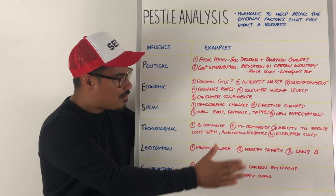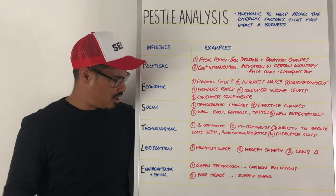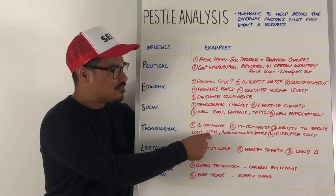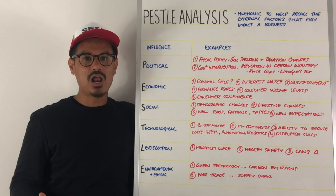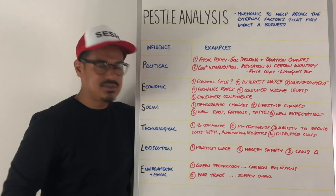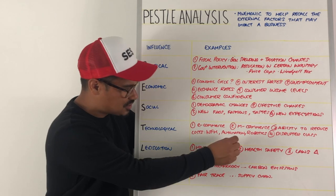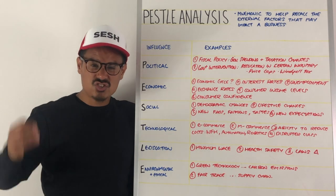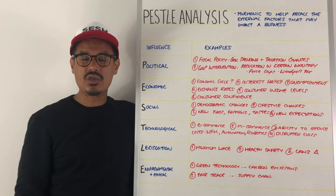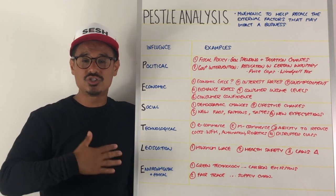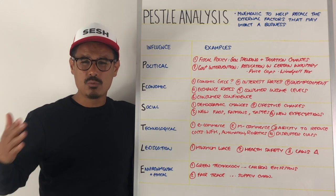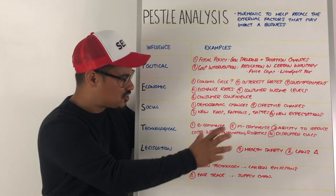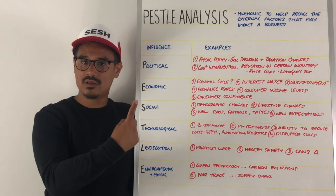Technological factors include e-commerce and m-commerce, which are growing rapidly. Businesses are also looking at reducing costs — the flexible working and work-from-home movement has been greatly accelerated by the recent health crisis, which may reduce costs for large corporations. There is also a move towards automation and robotics, as well as disruptive businesses such as Lemonade, potentially disrupting the insurance market, and Airbnb, disrupting the hotel and hospitality market. These are clear examples of technological change within PESTEL analysis.